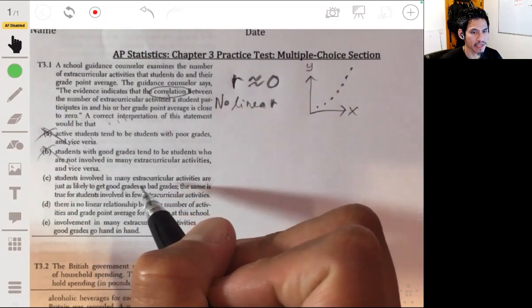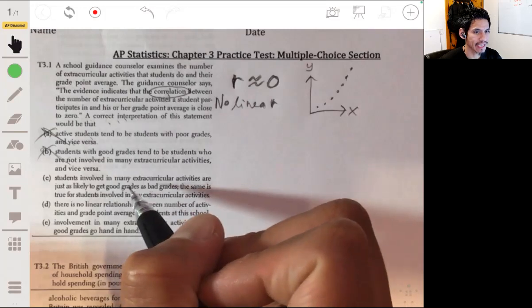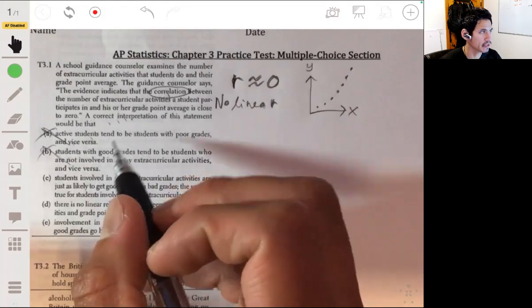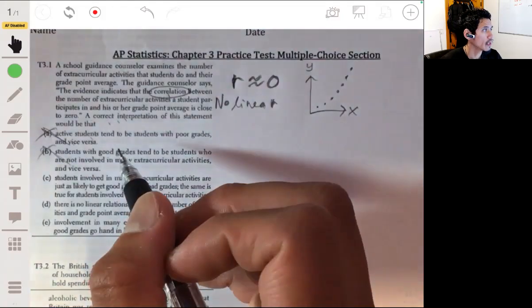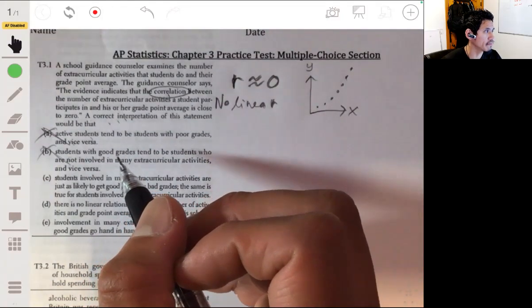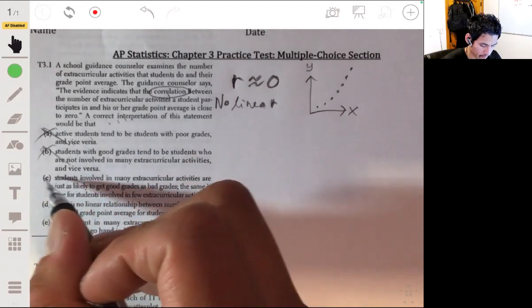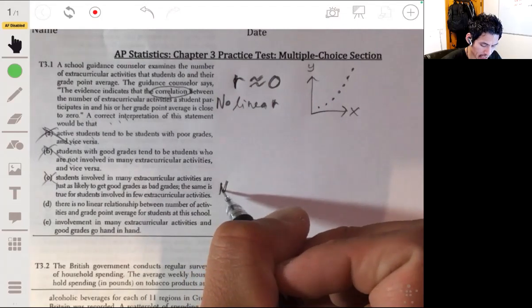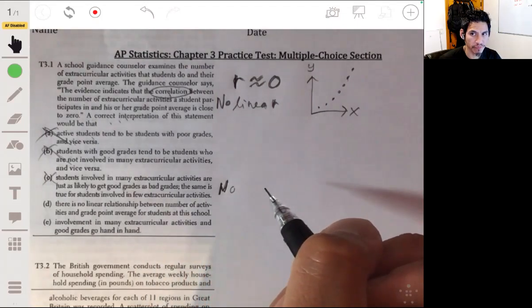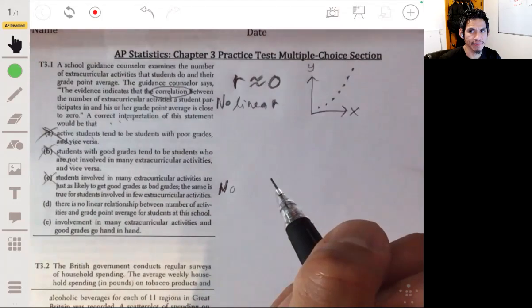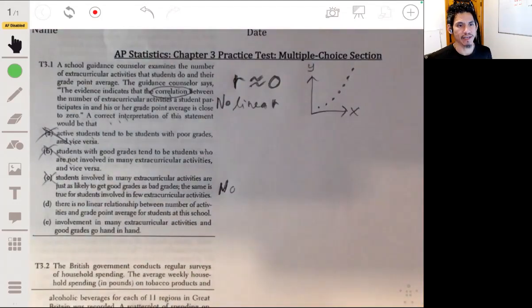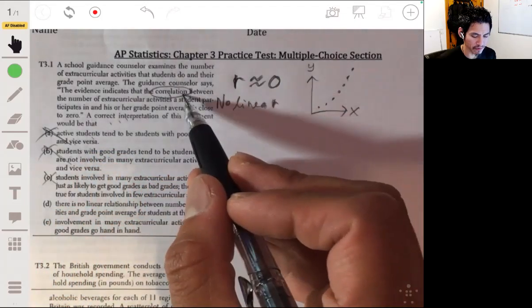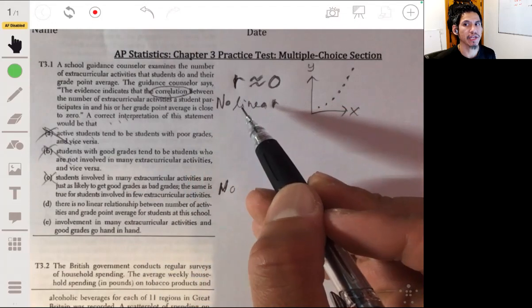Option C: students involved in many extracurricular activities are just as likely to get good grades as bad grades. The same is true for students involved in few extracurricular activities. Now this is basically saying that there's not even a relationship. Again, it's possible that there isn't a relationship—I know I'm saying that a thousand times, but that's really what they're trying to get at. They're trying to see if you really understand that correlation refers to the strength of a linear relationship.